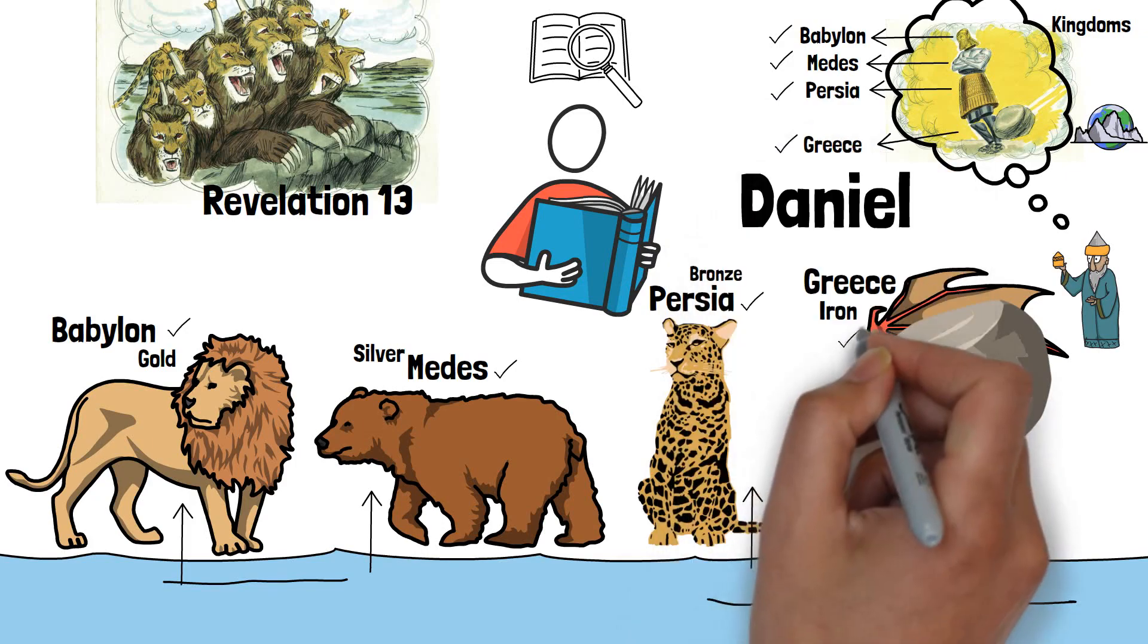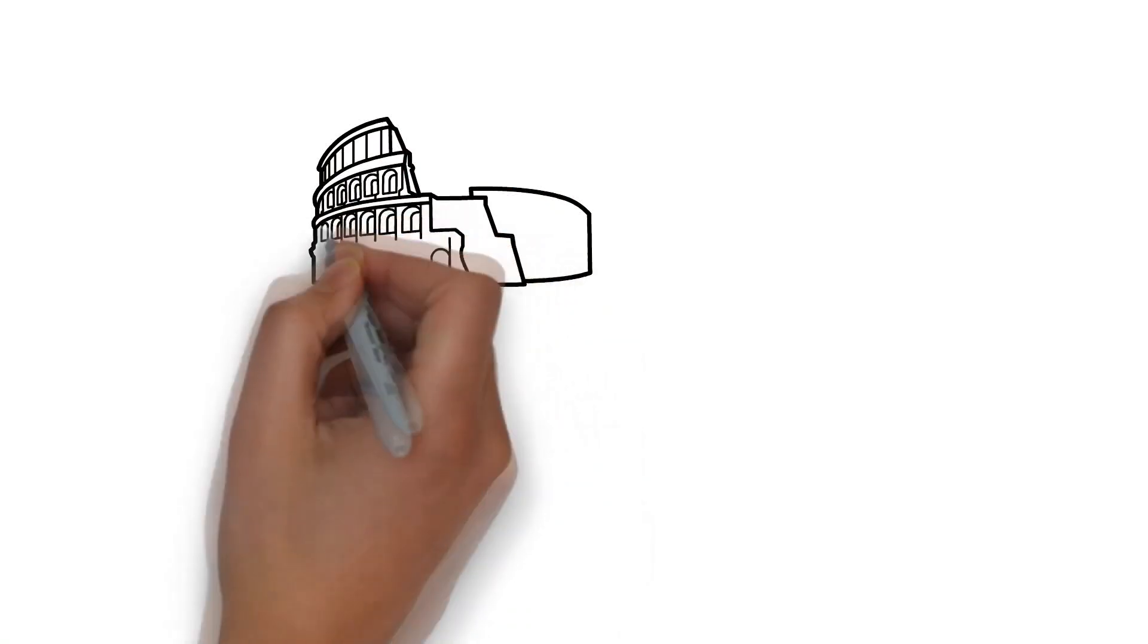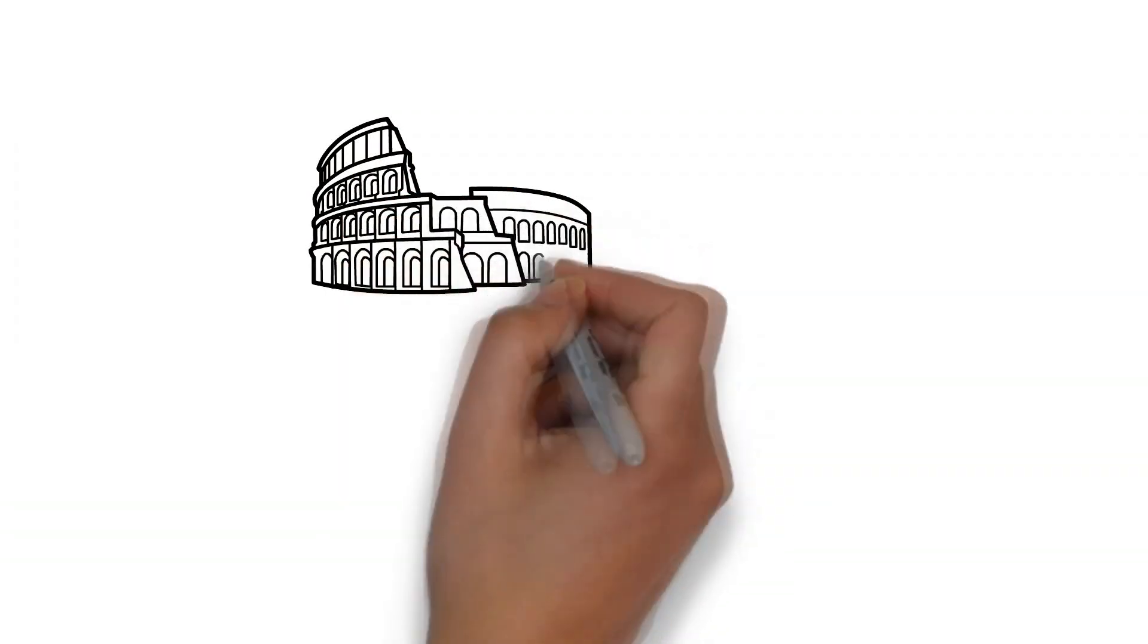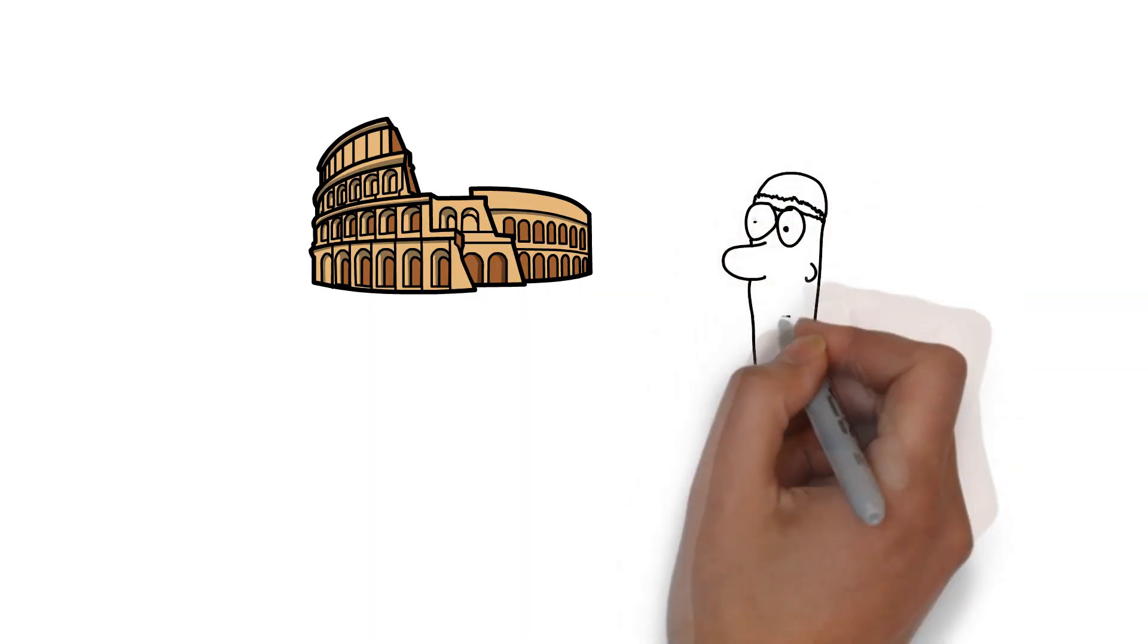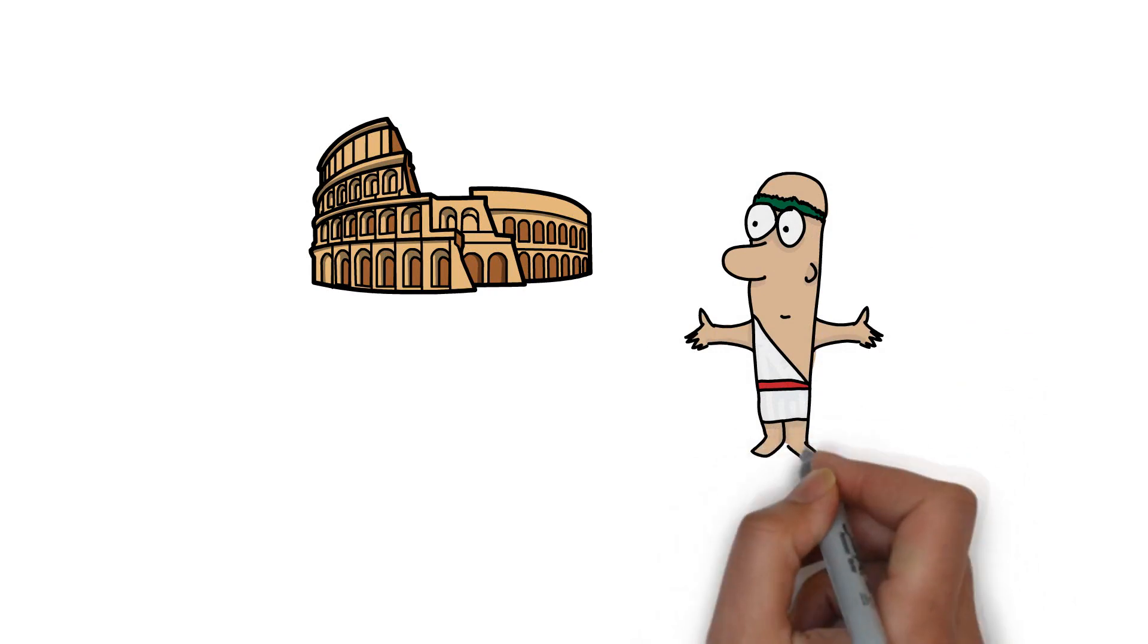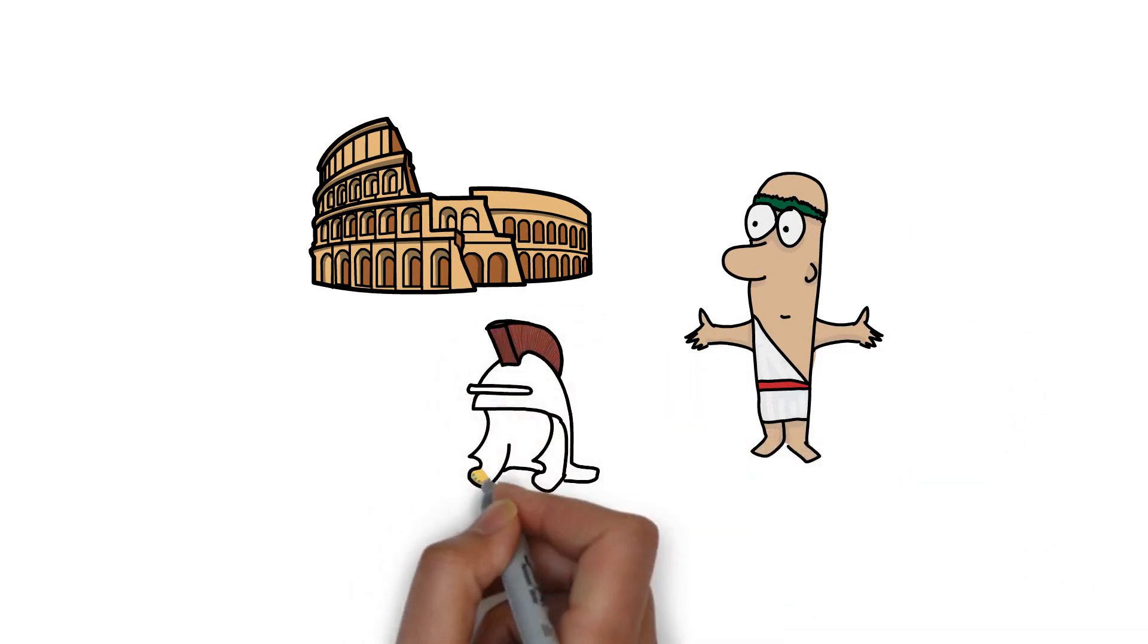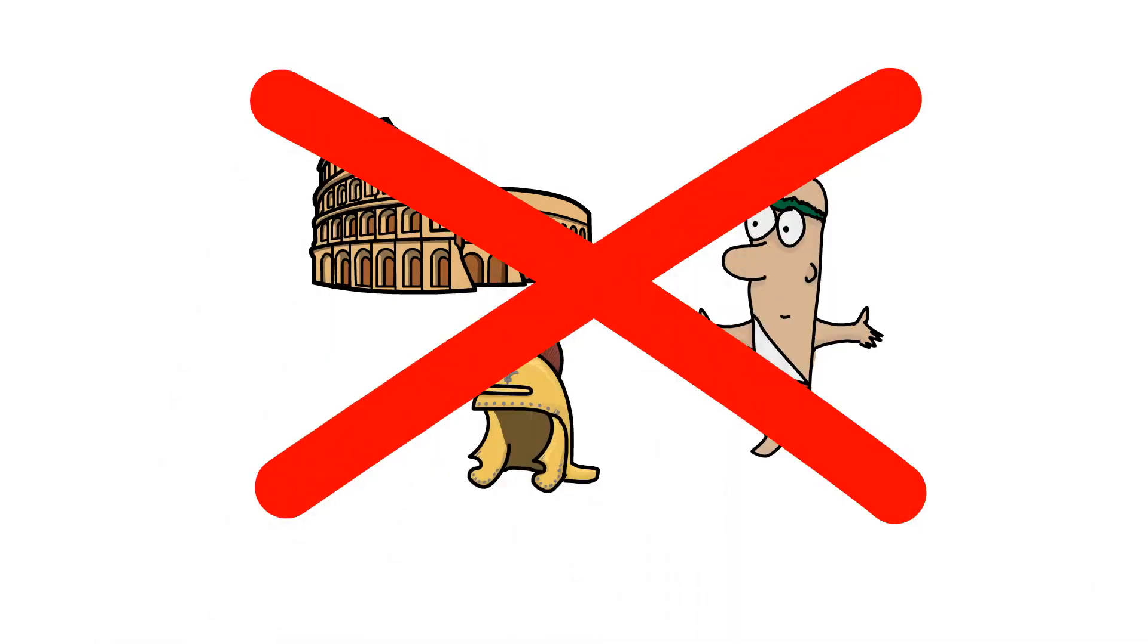The corresponding nature of these symbols demonstrates that the Roman interpretation is not derived from scripture. Instead, it is often derived from outside sources or misunderstandings. The beast that arises from the sea in Revelation 13 is a conglomeration of the first three kingdoms mentioned in the Book of Daniel. They are Babylon, the Medes, and Persia, or the lion, the leopard, and the bear.